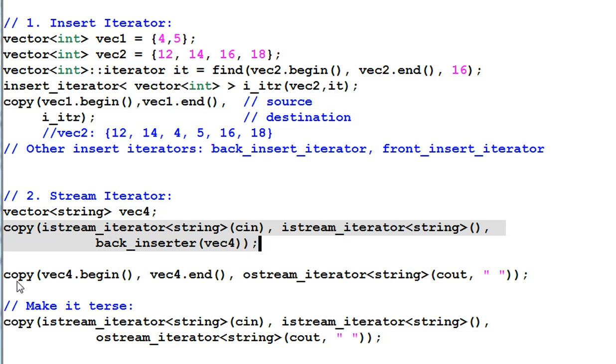I can also copy everything inside vec4 to ostream_iterator of standard out, cout. So everything in vec4 is printed out at standard out, and each element is separated with space. We can even combine these two statements together into one statement, like this. This demonstrates the power and flexibility of standard library. How one line of code can achieve complicated things.